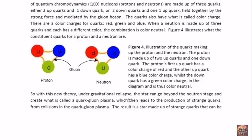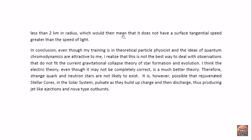In this theory, under gravitational collapse, the star can go beyond the neutron stage and create what's called a quark-gluon plasma, which then leads to the production of strange quarks from collision into the quark-gluon plasma. So basically you combine an up quark with a W boson and that gives rise to a strange quark. The result is a star made up of strange quarks that can be less than two kilometers in radius. Which would then mean that it does not have a surface tangential speed greater than the speed of light. And this solves the problem until we find another star that has a period that's even smaller. And possibly the two kilometer radius will not be enough to get a surface speed that is not greater than the speed of light. I wonder what they will come up with next.